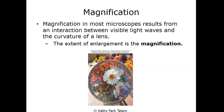Magnification deals with the interaction between light waves from the light source and the curvature of the lens. You get about 10× magnification from the ocular lens, and then additional magnification depending on which objective lens you're using. Multiplying the ocular and objective magnifications together gives us total magnification.